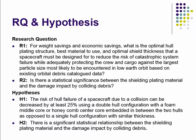Then you combine your research questions and hypotheses. Here's an example: 'The risk of hull failure of a spacecraft due to collision can be decreased by at least 25% using a double-hull configuration with a foam middle core or honeycomb center core embedded in between the two hulls, as opposed to a single-hull configuration with similar thickness.' That's based off the first research question. So this is a good example of research questions and hypothesis.